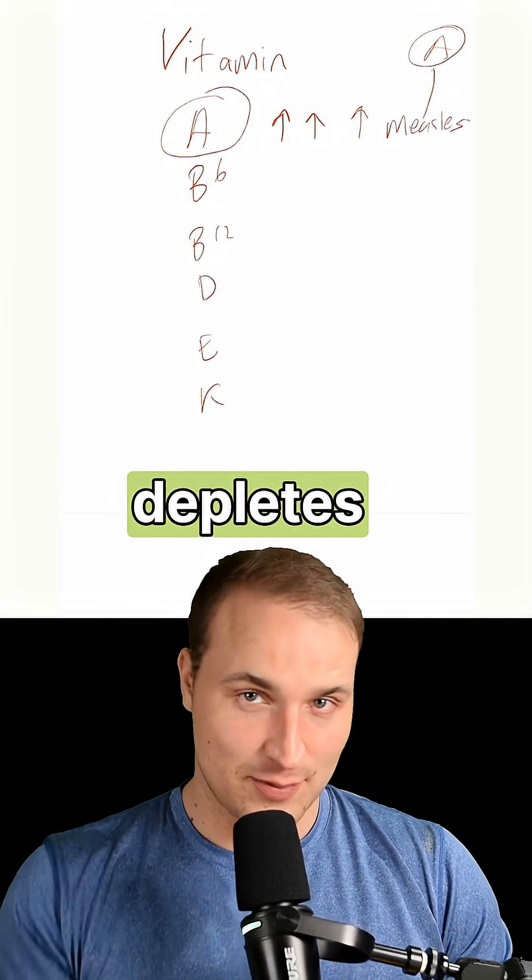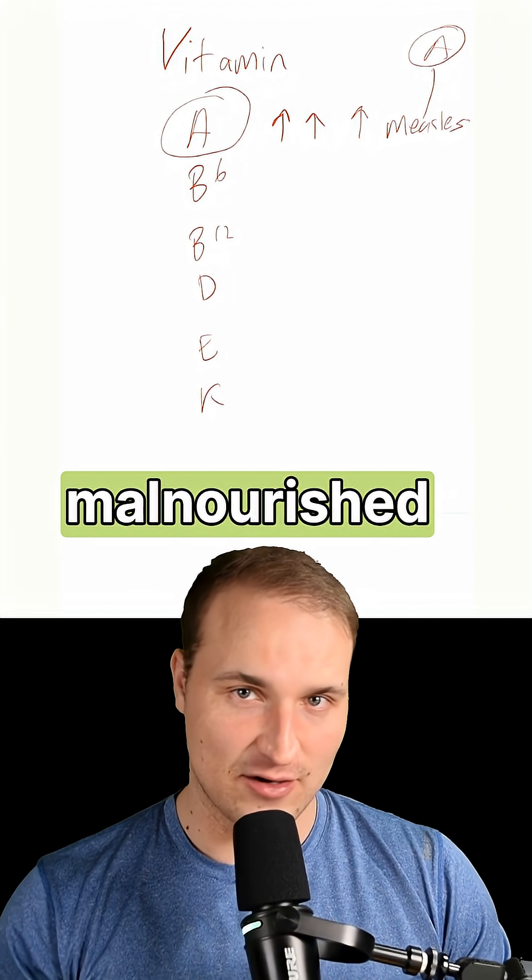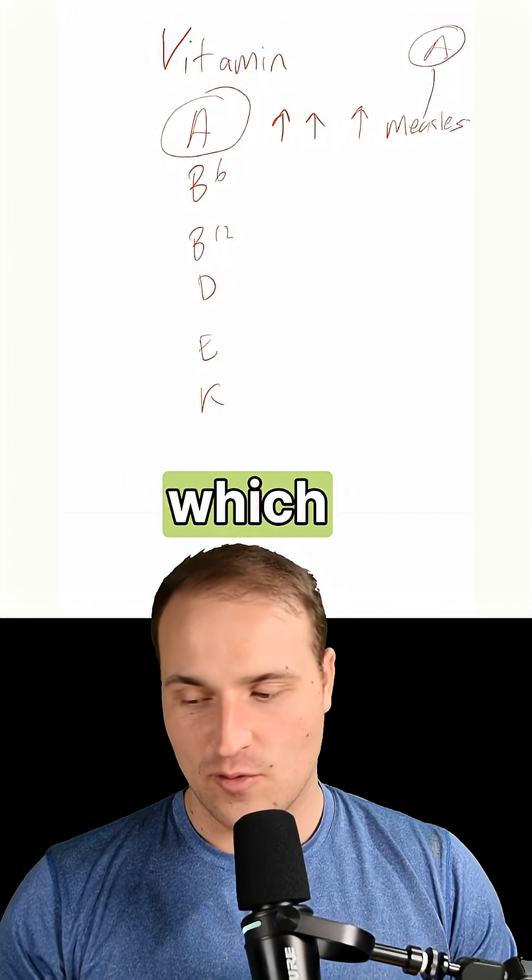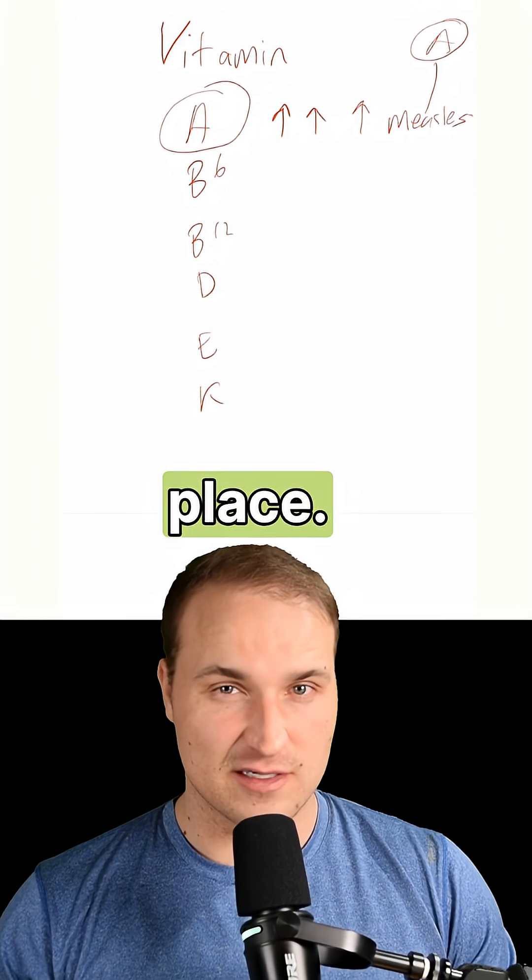So measles actually depletes vitamin A stores, especially in malnourished or unvaccinated children, which are the demographic most likely to have measles in the first place.